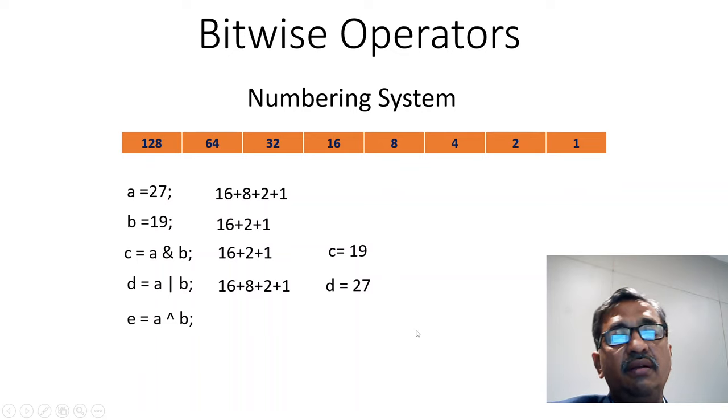And E, we will be considering as A XOR B. We will consider the numbers which are present in only one of them. Like here, 16 is present in both. 8 is present only in A. 2 is present in both. And 1 is present in both. So we will consider only 8.